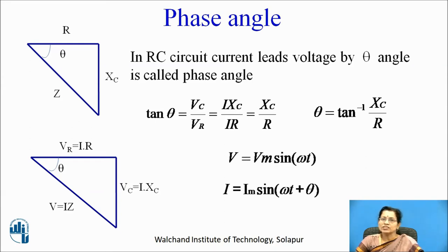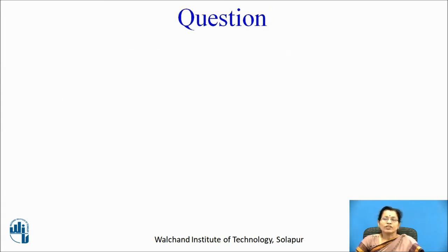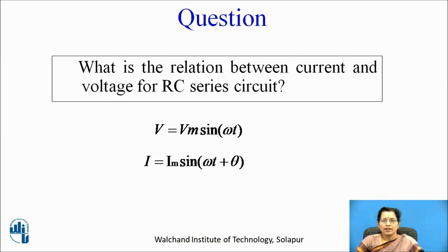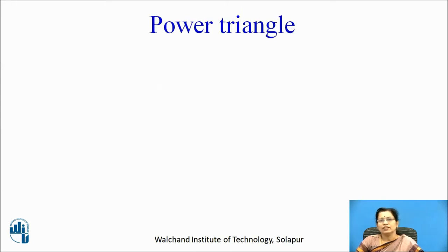We can also write down the voltage equation and current equation: V equal to Vm sin omega t and I equal to Im sin omega t plus theta. Pause the video and think — what is the relation between current and voltage for RC series circuit? If the voltage equation is V equal to Vm sin omega t and I equal to Im sin omega t plus theta, then the answer is: current leads voltage by theta degrees.